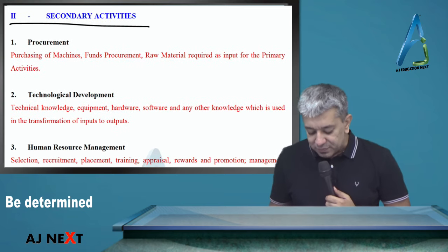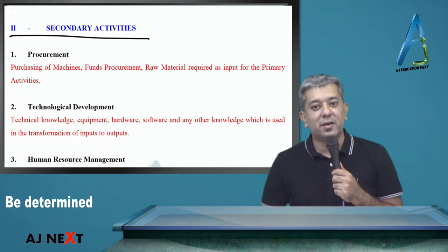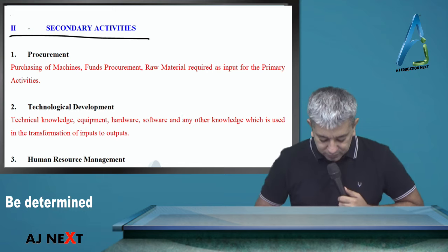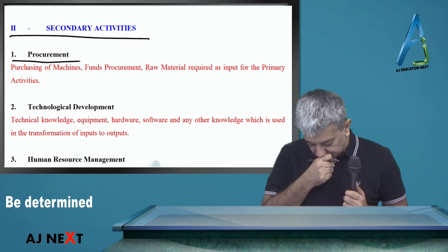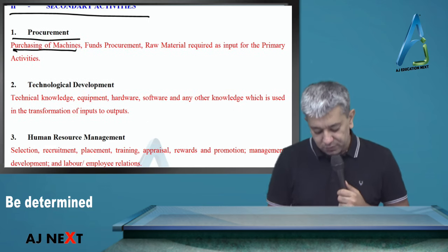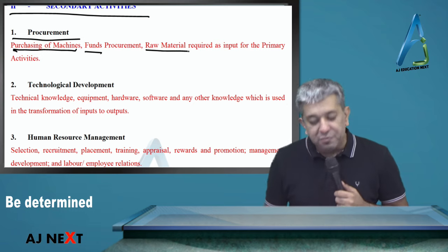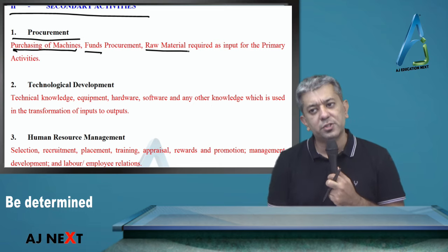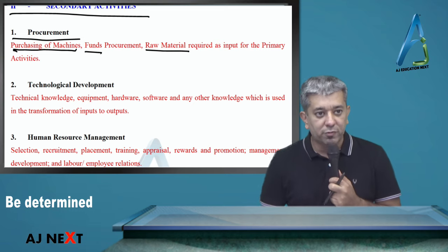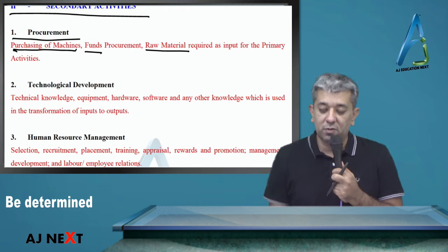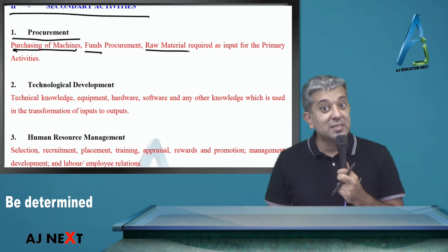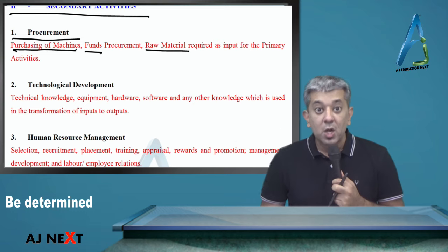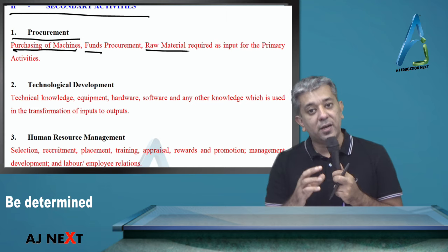What are secondary activities? Secondary activities help in running primary activities in a proper way. These activities are not waste — we require these activities. First: procurement. Obviously it could be procurement of machines, procurement of funds, procurement of raw material. Aapko funds procure karne ki zururat hai — from debentures, preference shares, equity shares. There are people doing this job of raising funds — from international markets, bonds, convertible bonds. From where to purchase the machines — you need technical people for that. Raw material kaha se purchase karein, what will be the credit terms, et cetera.